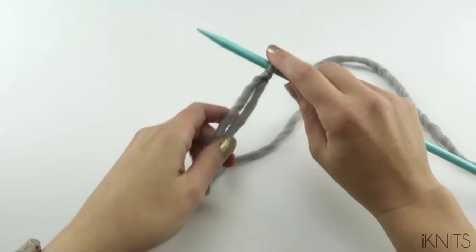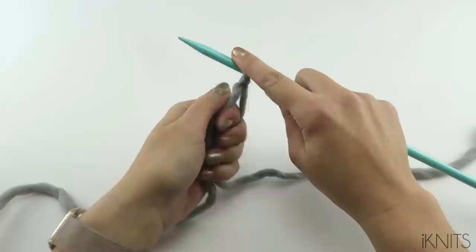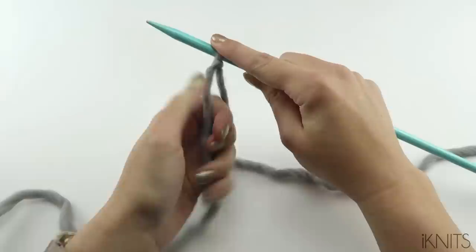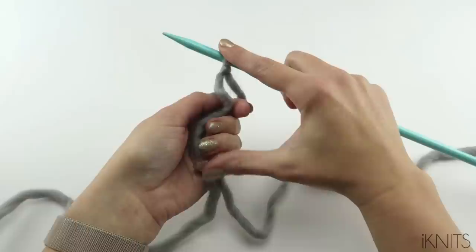When you cast on, you want your tail to be in the front. And then your working yarn where your ball is to be in the back. This is the trickiest part but I promise it's easy. You'll get the hang of it. So this is how I hold my yarn. Just like that. You're going to have to pull your tail and your working yarn apart from one another. So again with your thumb and your index finger you're going to hold your two strands with these three fingers. You're just going to pull apart. Just like that.